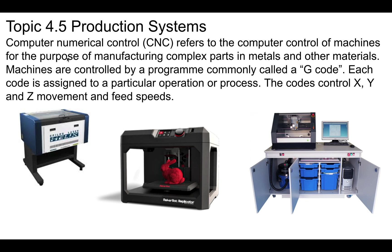Let's move on to CNC — computer numeric control. This refers to computer-controlled machines for the purpose of manufacturing complex parts in metals and other materials. Machines are controlled by programs called G-code. Each code is assigned a particular operation or process, and the codes control your X, Y, and Z movements and feed speeds. These are examples of CNC machines.